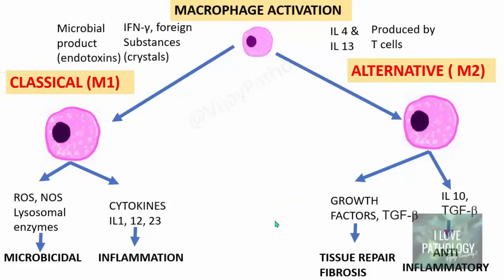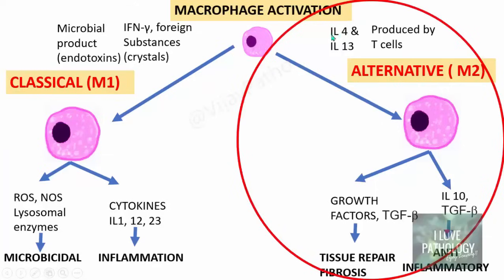The most important cells involved in scar formation are macrophages. Macrophages can be activated in two ways: classical activation producing M1 macrophages, which are inflammatory, microbicidal, and promote inflammation; and alternative activation producing M2 macrophages, which are anti-inflammatory and help in the repair process. Throughout this tissue repair series, the macrophages discussed are the alternatively activated M2 type.